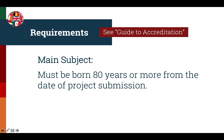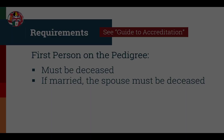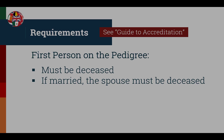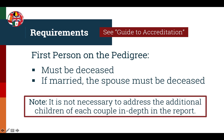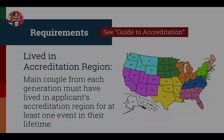The main subject or the first person on the pedigree must be born 80 years or more from the date of submission. For example, if the submission year is 2020, then the main subject must be born in 1940 or earlier. Additionally, the first person on the pedigree must be deceased, and if this person is married their spouse must also be deceased. Keep in mind that it's not necessary to address the children of each couple in depth in the report. If extensive research needs to be addressed and there's no room for the children, refer the reader to the research log and family group sheets for more details.